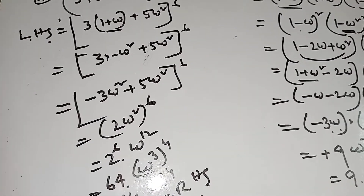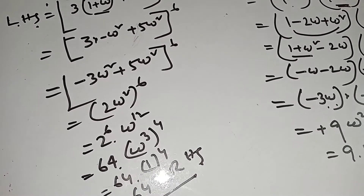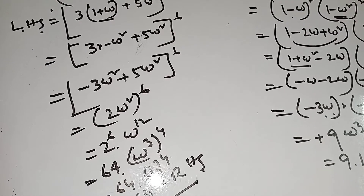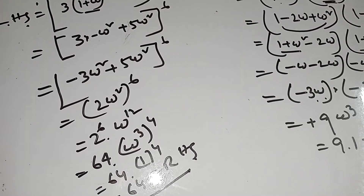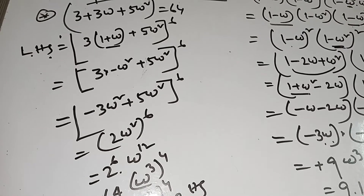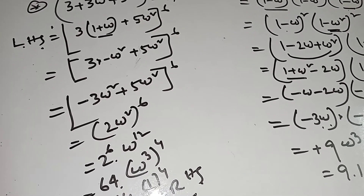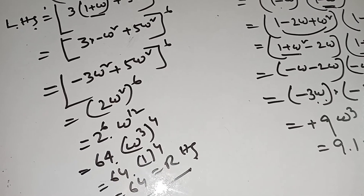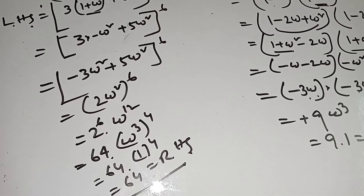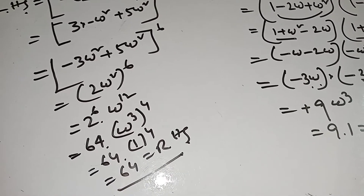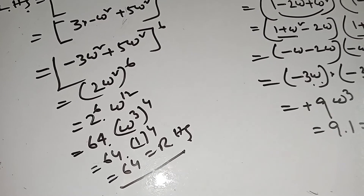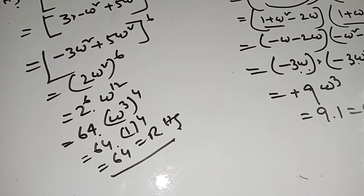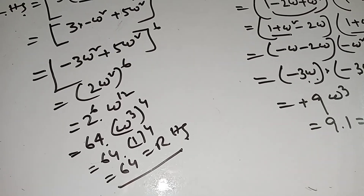That is 2 to the power 6 times omega to the power 12. Two to the power 6 equals 64. Omega to the power 12 you can break as omega cube whole to the power 4. Omega cube is 1, so this is 1 to the power 4 equals 1. Therefore 64 times 1 equals 64, which equals the right-hand side. Proved.